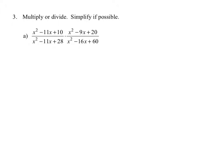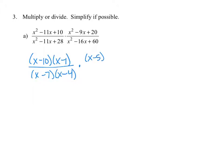Here we're multiplying, so let's begin by factoring each numerator and denominator. The first numerator x squared minus 11x plus 10 factors into x minus 10 and x minus 1. The first denominator x squared minus 11x plus 28 factors into x minus 7 and x minus 4. The numerator of the second expression, x squared minus 9x plus 20, factors into x minus 5 and x minus 4. Now let's look to see if there are any common factors that we can divide out.